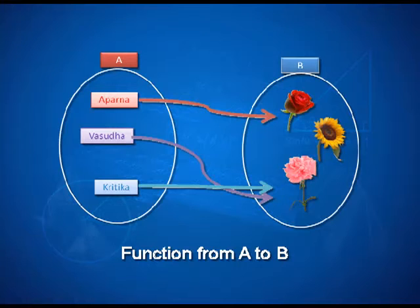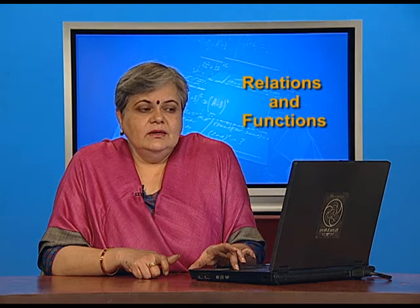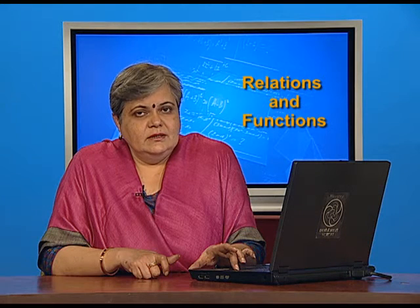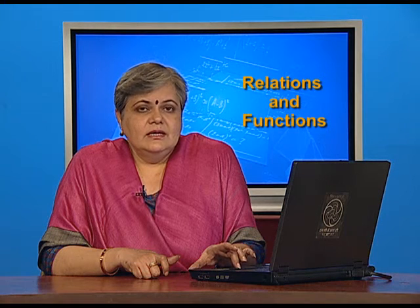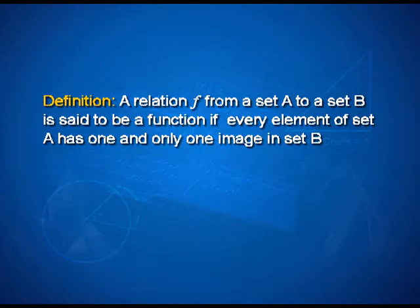At the same time, an element of the set B — for example, in this case the sunflower — is not associated with any element of the set A. So sunflower is not the image of any element coming from set A, and that is perfectly fine. The definition: a relation F from a set A to a set B is said to be a function if every element of set A has one and only one image in set B.